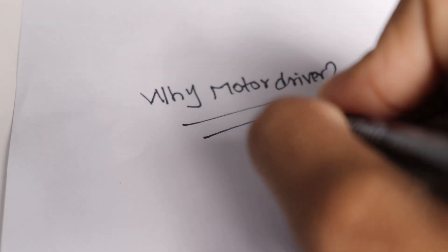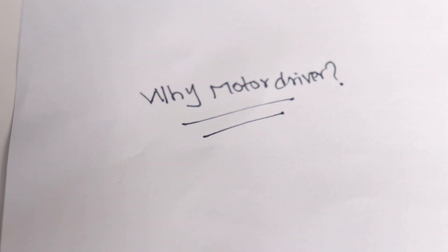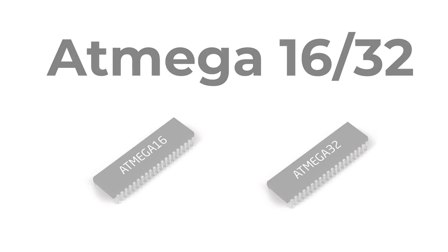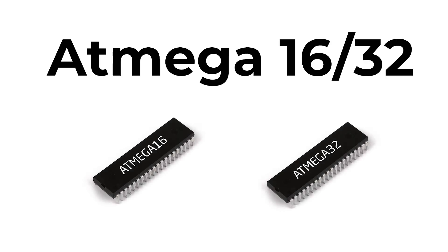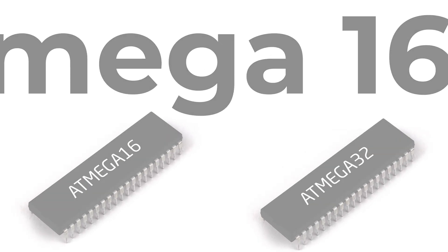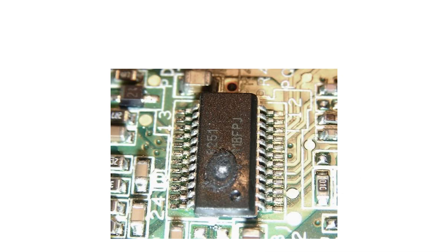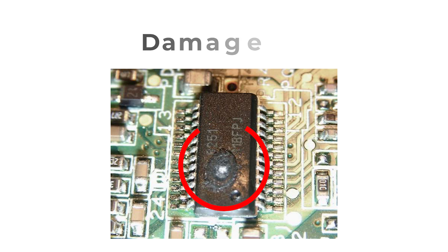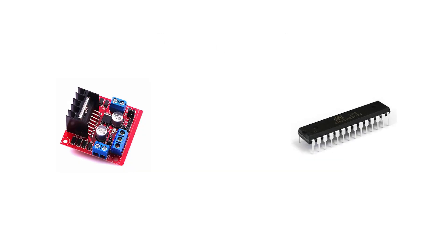First of all, the question is: why do we need motor drivers? Normally DC motors require a current of about 250 milliamps, and ICs like ATmega16, ATmega32, or even the 8051 do not produce this type of current. If you connect these motors directly to the ICs, the ICs are going to get damaged.